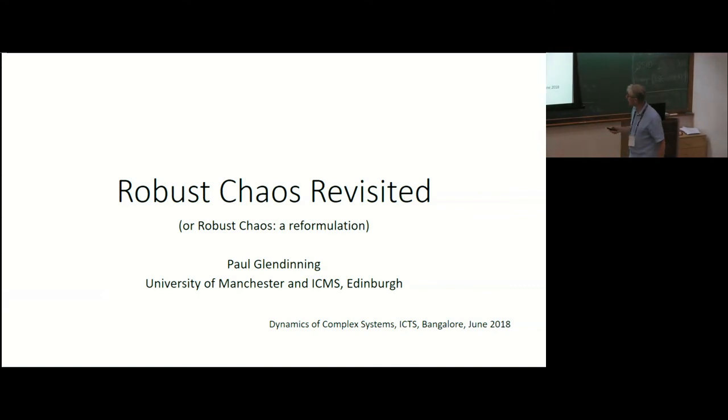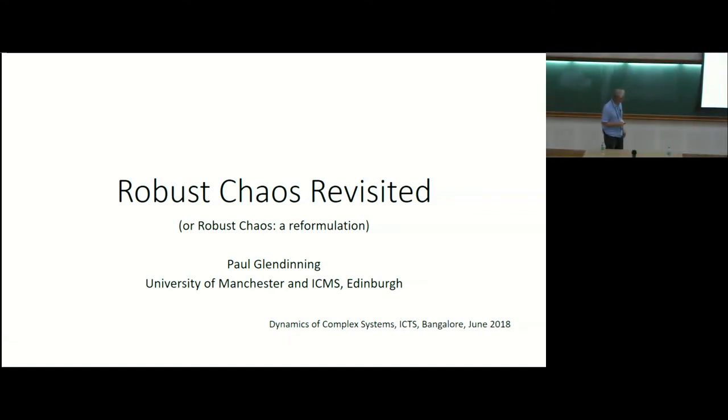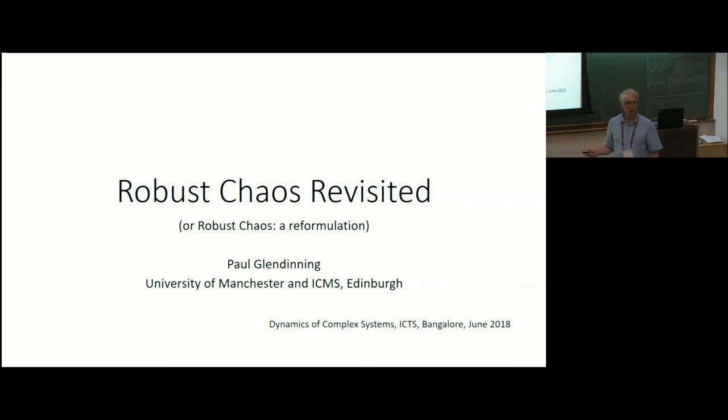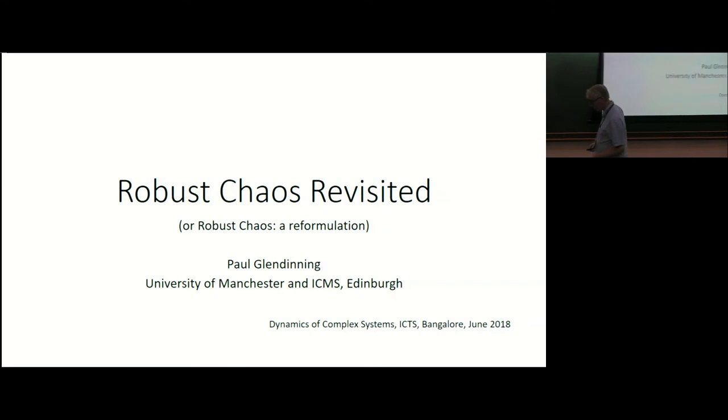So I want to talk about robust chaos revisited. When it was published last year, one of the referees actually revealed himself to me. It was Jim Yorke from Maryland, who was one of the founding fathers of chaos theory. He produced the first paper in 1973 which used the word chaos. And what I presented this was as a review. And he said, no, it's not a review. It's a reformulation.